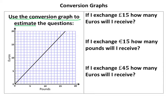The first question says if I exchange 15 pounds, how many Euros will I receive? To prove that I'm using the graph, I'm going to take my ruler and draw a straight line up from 15 and then across. 15 pounds on this graph is exactly 18 Euros. That proves I'm using the graph, and the mark scheme often says to make sure lines are drawn on the graph.